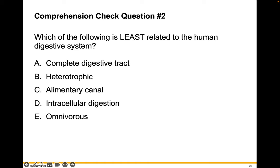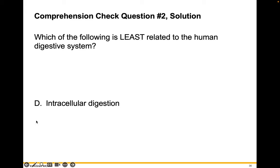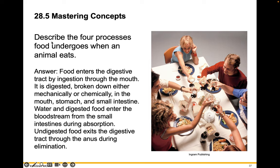Let's check your comprehension. Which of the following is least related to the human digestive system: a complete digestive tract, heterotrophic, alimentary canal, intracellular digestion, or omnivorous? The answer is intracellular digestion — we don't do our digestion intracellularly. We have a gastrointestinal tract where food is broken down; we're not sponges. Describe the four processes food undergoes when an animal eats. Take a moment and jot this down in your own words.